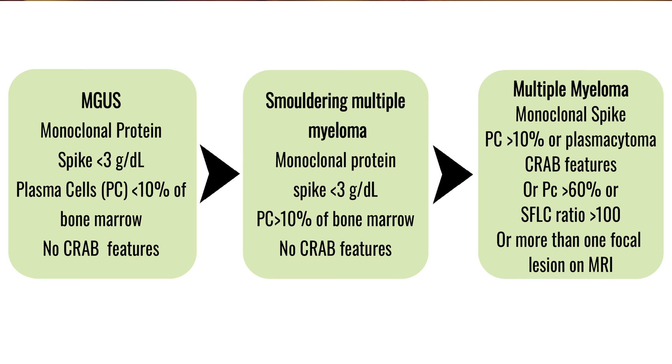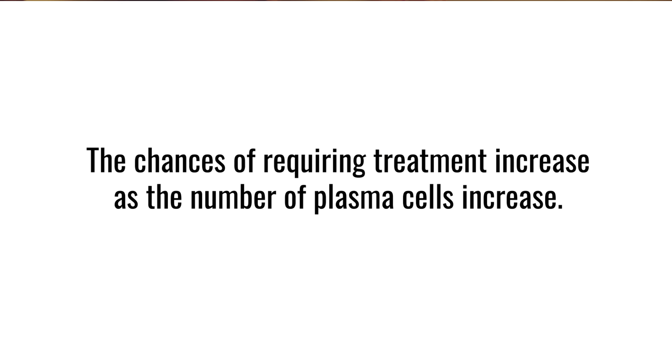Measuring plasma cells in the bone marrow is important to get the diagnosis correct. Less than 10% is MGUS, more than 10% is myeloma. If there is no end organ damage, then it's smouldering myeloma. If there is end organ damage, it's myeloma that requires treatment. The chances of requiring treatment increase as the number of plasma cells increase, and there's a move to change the definition threshold from 10% to 20%.